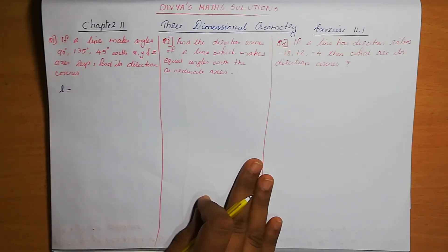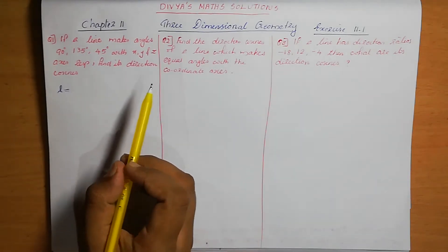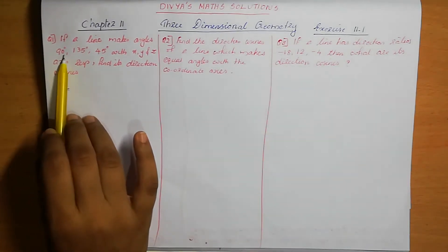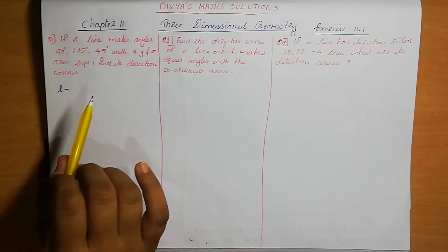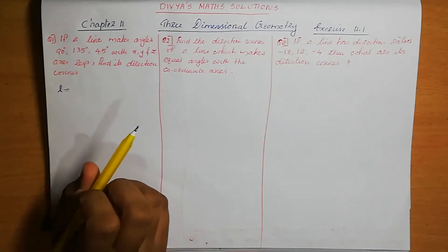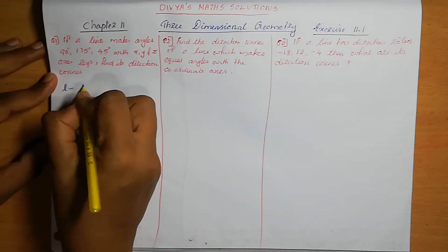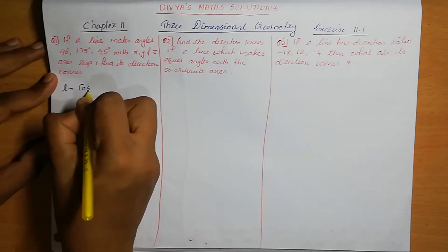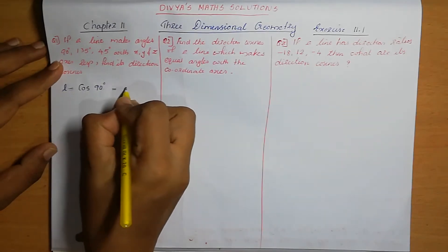The direction cosines of the line we can take as L, M and N. So L is equal to cos alpha, M is equal to cos beta, and N is equal to cos gamma. Then alpha, beta, gamma are the angles. So here we can take 90, 135 and 45 instead of alpha, beta and gamma.